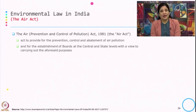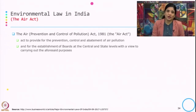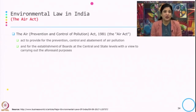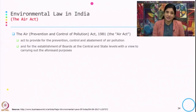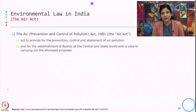Then we have the Air Act. If you ask, possibly the two acts everybody knows about the environment are the Air Act and the Water Act. The Air Act — the Air Prevention and Control of Pollution Act 1981 — is to provide prevention, control, and abatement of air pollution, and for the establishment of boards at the central and state level to carry out these objectives.